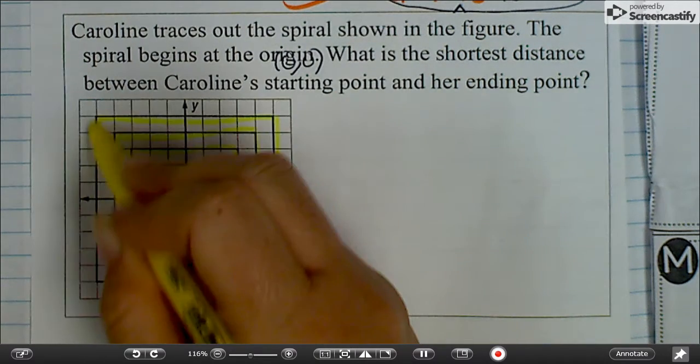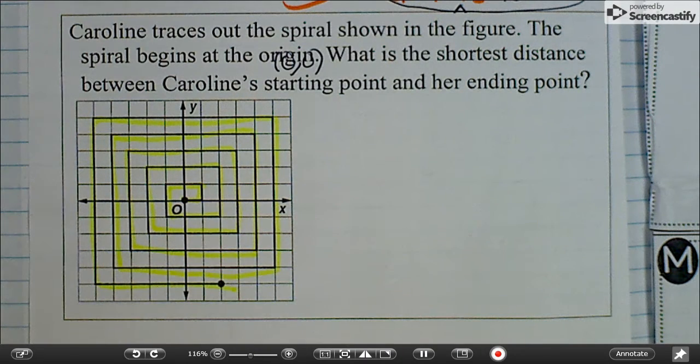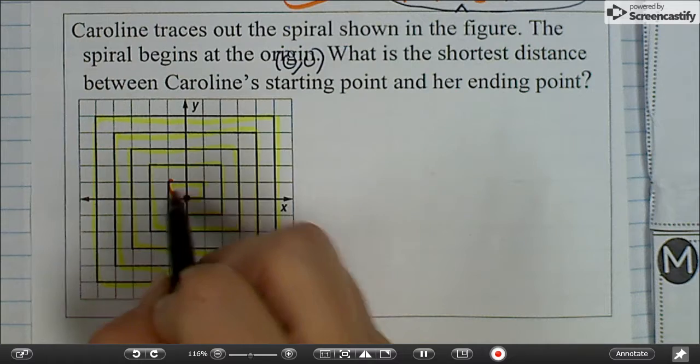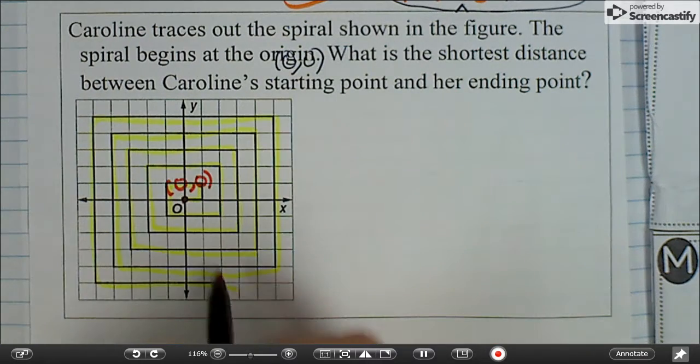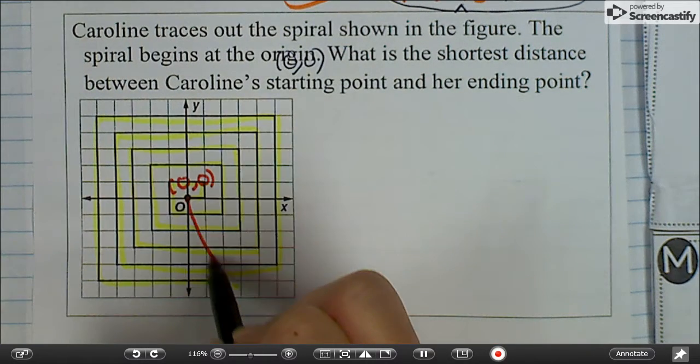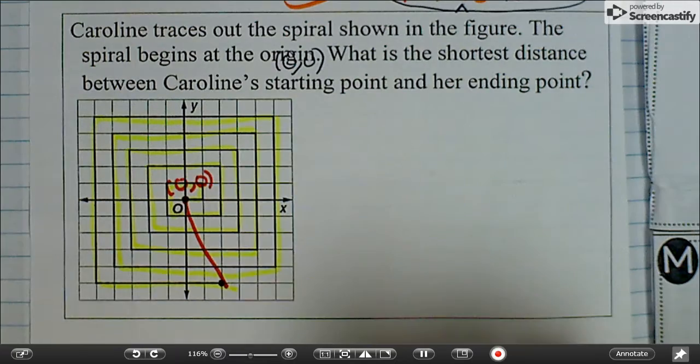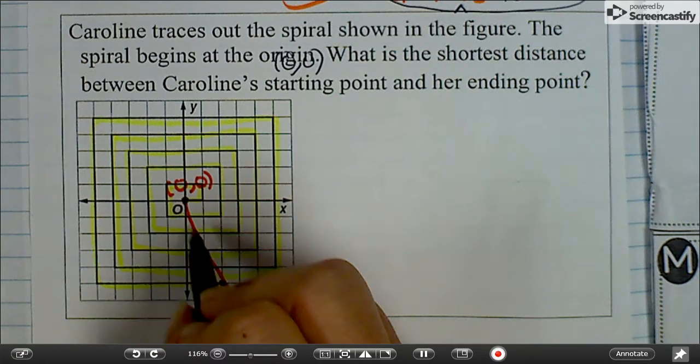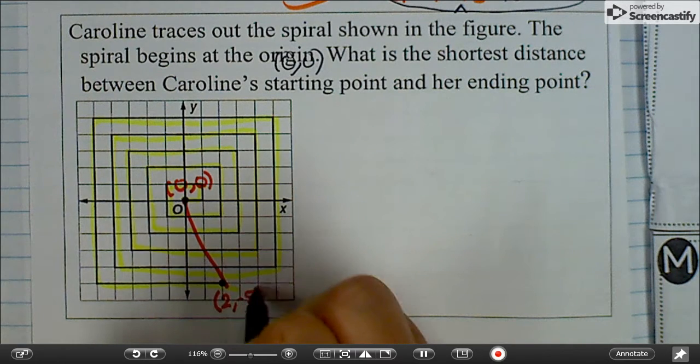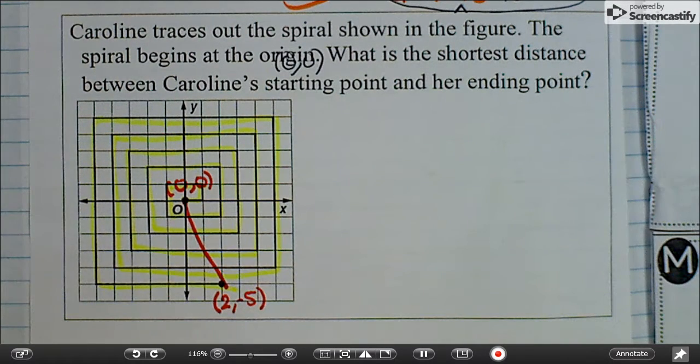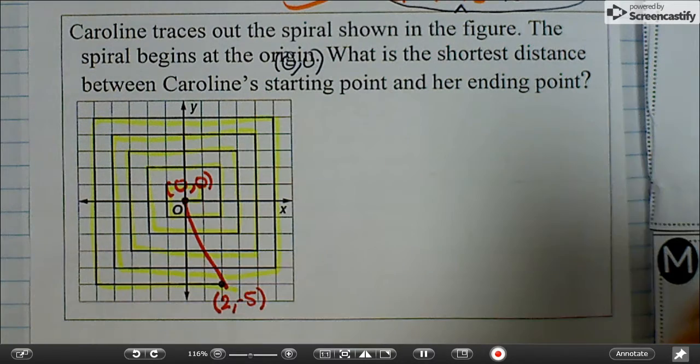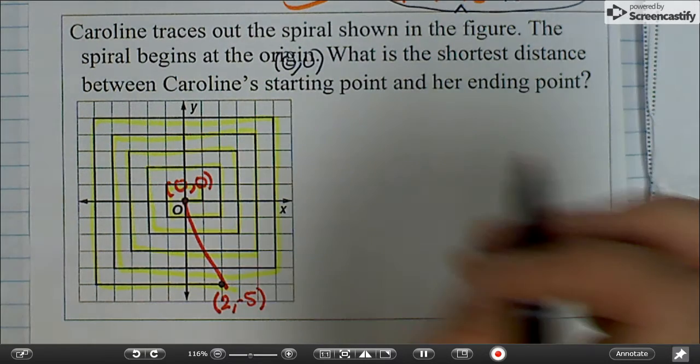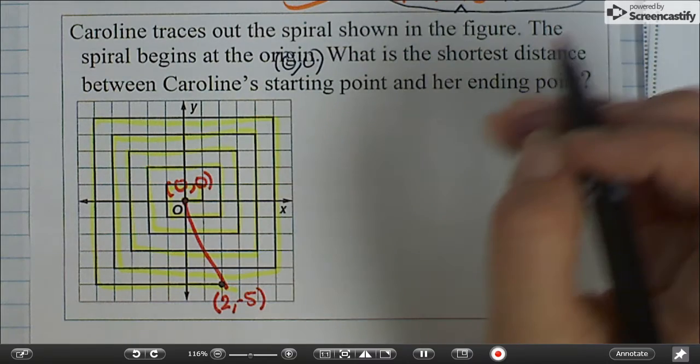The question is, what is the shortest distance between her starting point, which is 0, 0, and her ending point? The shortest distance between any two points is a straight line. So that's 2, negative 5. And you're going to use the distance formula to find out how far that is. So pause the video, do the distance formula, and then check your answer with mine.